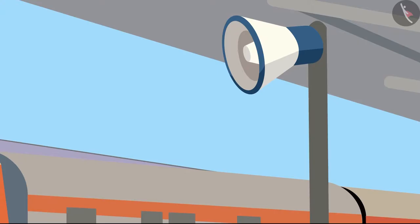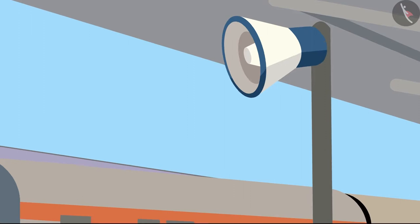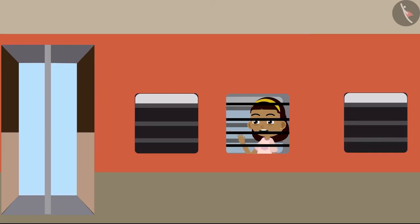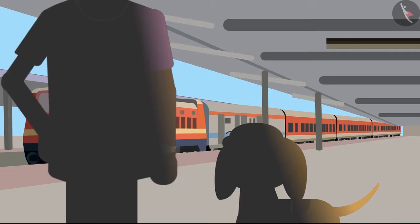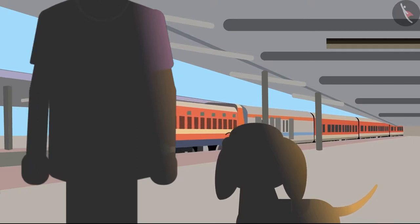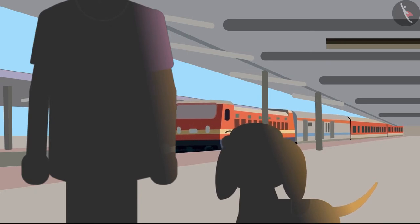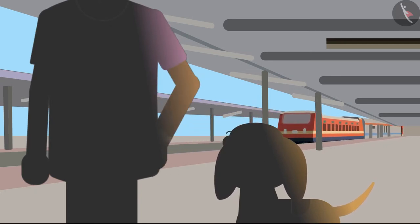Just then the departure of the train was announced. Zia's father and Bobo say goodbye to them, and slowly the train picked up its speed.